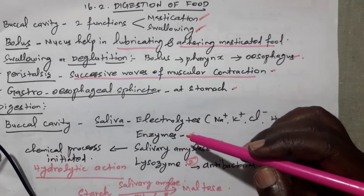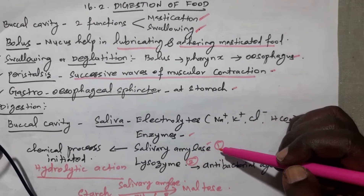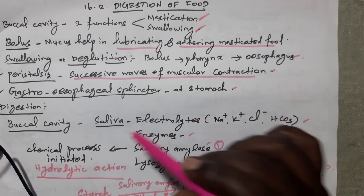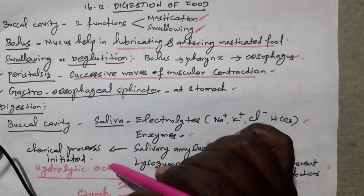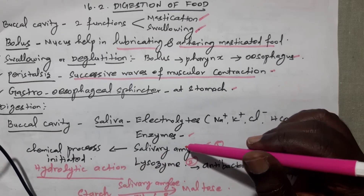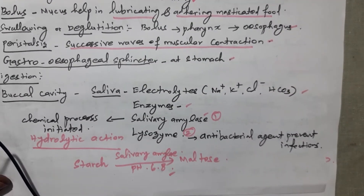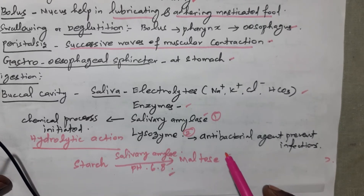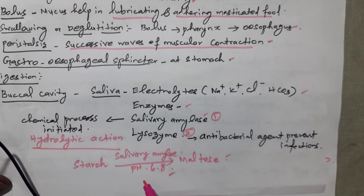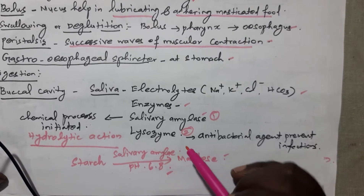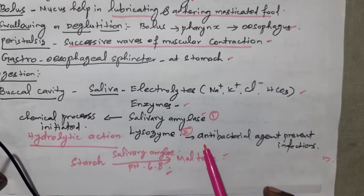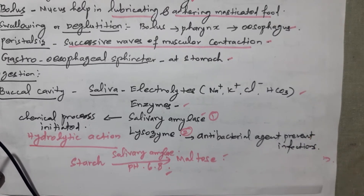First is salivary amylase — it initiates the chemical process of digestion. This is a hydrolytic action on carbohydrates. The salivary amylase divides starch, a polysaccharide, into maltose, a disaccharide, at an optimum pH of 6.8. Second is lysozyme, which acts as an antibacterial agent that prevents infection. That is the buccal cavity activity.